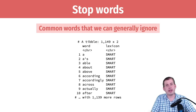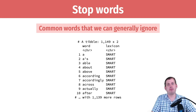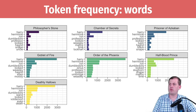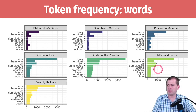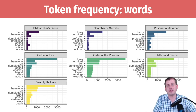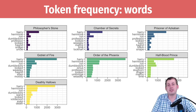Once you tokenize your text and create the tokens — whether or not you stem them — generally the first step is to count them and plot the words. Here are the nine most common words in each of the Harry Potter books — all seven books, sorted by frequency from the top. The most common word in every single Harry Potter book, unsurprisingly, is Harry.